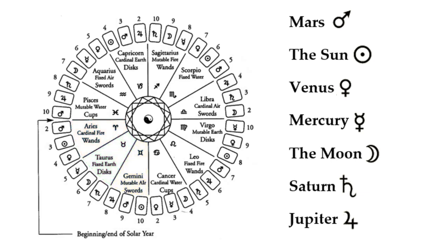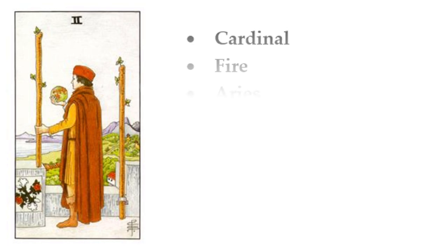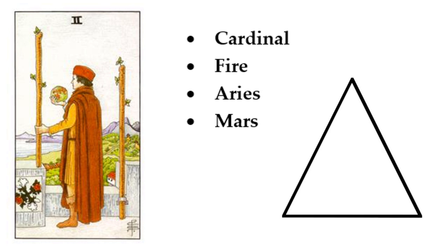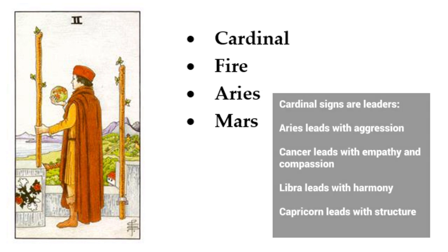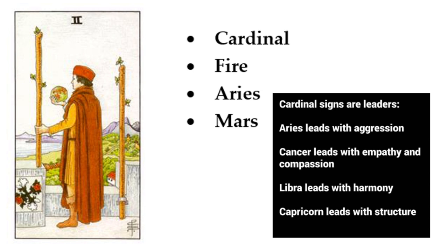This chart shows everything I have explained here, but I will move through each card individually so we can explore together what additional information we can glean from each when we add the element, the star sign, and the planet. We don't even have to commit to memory each individual card when we understand the patterns in play here. We'll start at the beginning, with the Two of Wands, which is Cardinal Fire, Aries, and the planet Mars. The entire suit of wands relates to fire and the archetypal spiritual world.